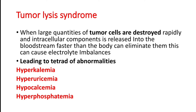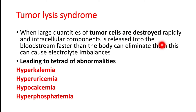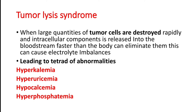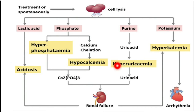The next emergency is tumor lysis syndrome. As the name suggests, tumor lysis means the breakdown of tumor. When large quantities of tumor cells are destroyed rapidly, it leads to the release of intracellular components into the bloodstream faster than the body can eliminate them, causing electrolyte imbalances. The tetrad of abnormalities are hyperkalemia, hyperuricemia, hypocalcemia, and hyperphosphatemia.